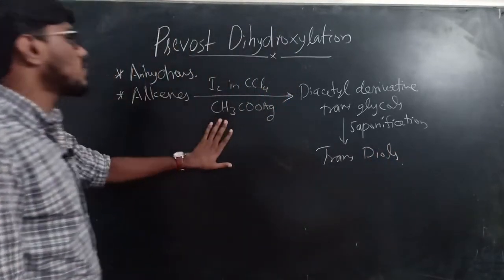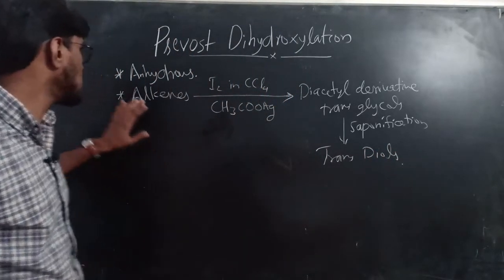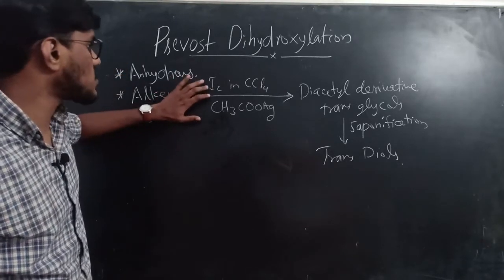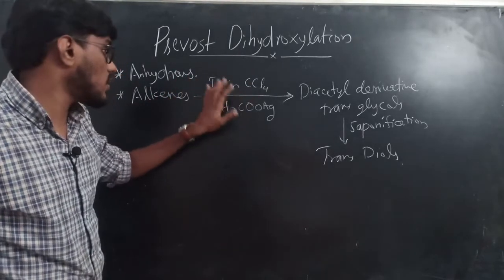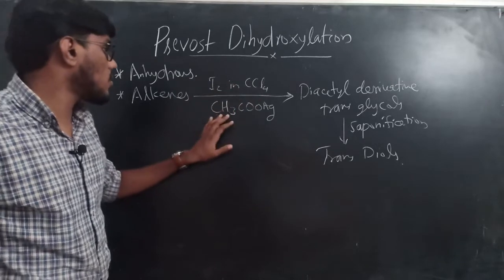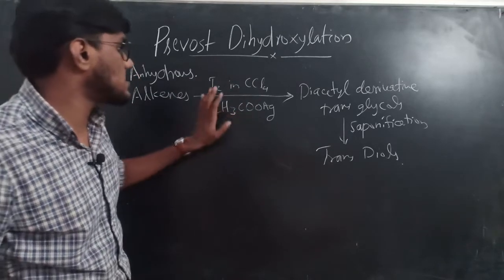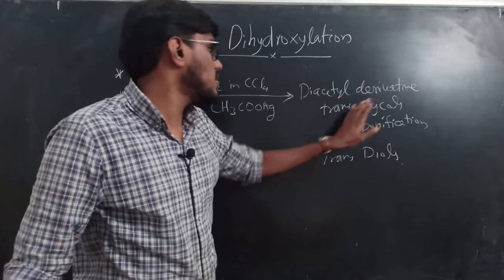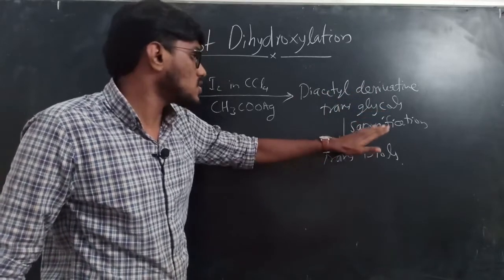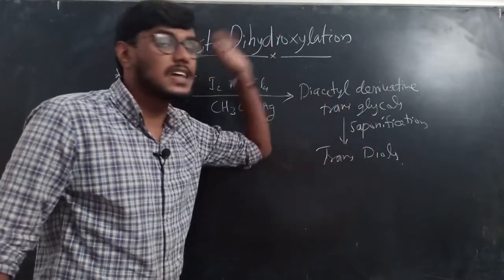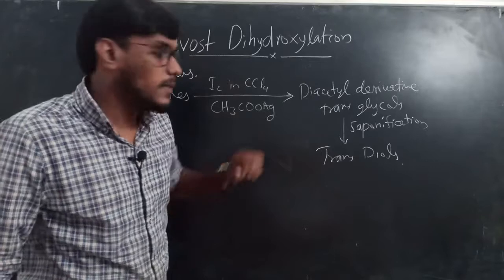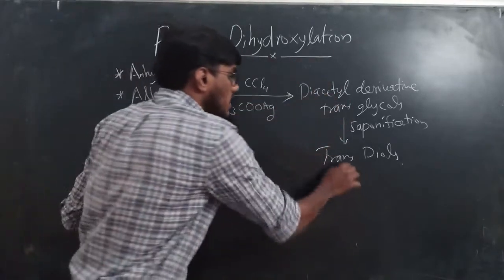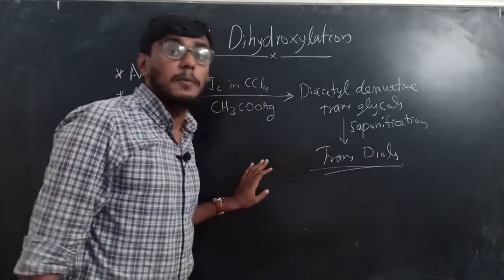So under anhydrous conditions, alkenes react with iodine in CCl4 and an equimolar amount of silver acetate to give firstly a diacetyl derivative of trans-glycols, which on saponification gives trans-diols. In Prevost dihydroxylation reaction, trans-diols are the product.